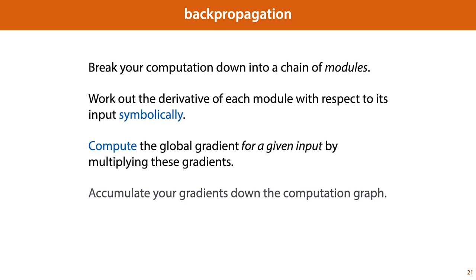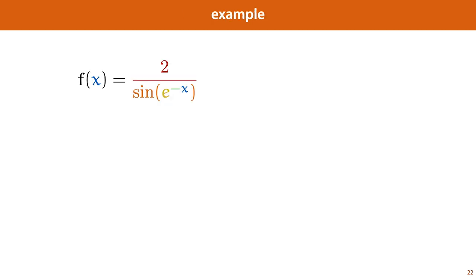Here are the basic steps required to implement backpropagation for a given function. We break down our computation into a chain of modules. We work out the derivative of each module with respect to its input symbolically. And then we compute the global gradient for a given input by multiplying these different gradients. Finally, in order to do this effectively, we need to do it in the right order — that's what we'll look at in the next video. For now, we'll just look at a very basic example to see the difference between local and global gradients.